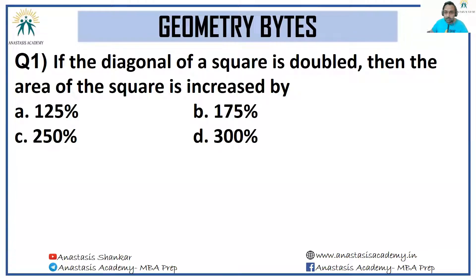Let's look at the solutions of Geometry Bytes, first episode. If the diagonal of a square is doubled, then the area of the square is increased by how much? We start with a small square.